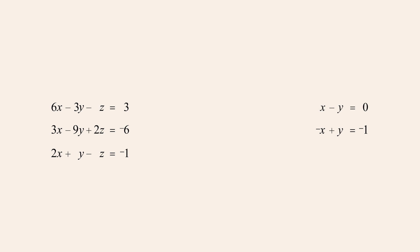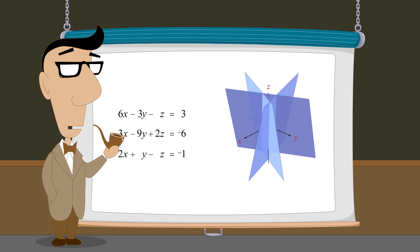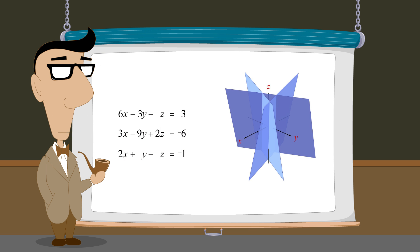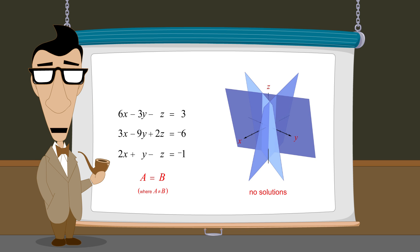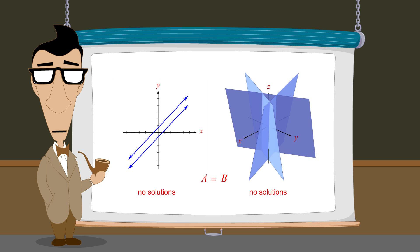We can then try to solve this system of two equations and two variables to find the values of x and y. But when we add these equations, both x and y are eliminated, resulting in the equation zero equals negative one. If we start with a system of three linear equations and three variables and by eliminating variables we obtain an equality between two unequal numbers such as zero equals negative one, then this indicates that the system has no solutions. As you may recall, obtaining an equality between two unequal numbers also indicates the same thing in a system of two linear equations in two variables.